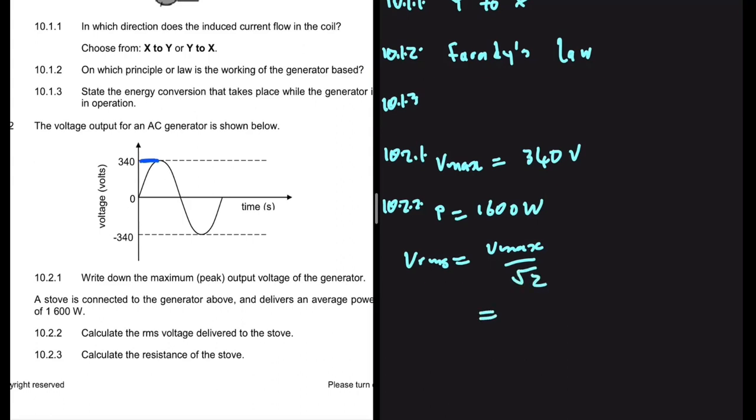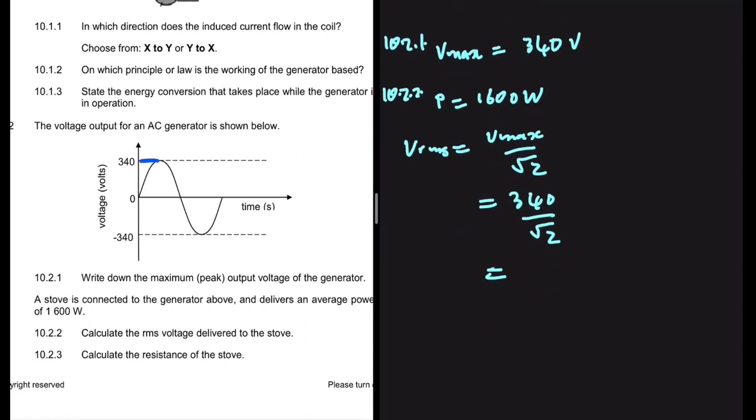V_max we've already deduced is 340. We just need to divide that by square root of two. If you put that in your calculator, you'll get 240.42 volts. This is the V_rms.